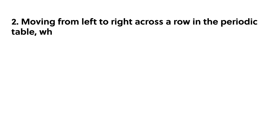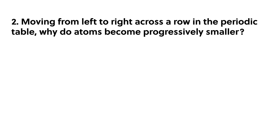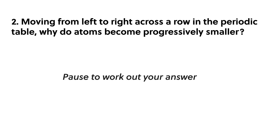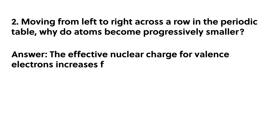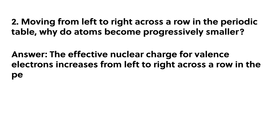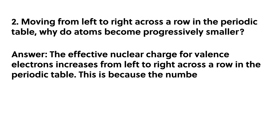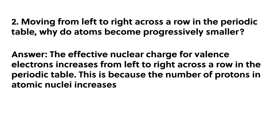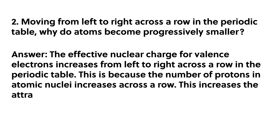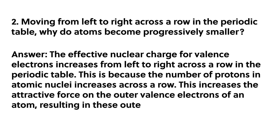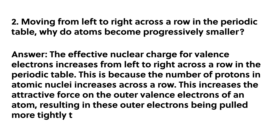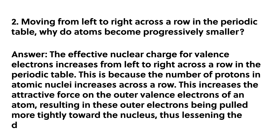Review question two: moving from left to right across a row in the periodic table, why do atoms become progressively smaller? The effective nuclear charge for valence electrons increases from left to right across a row in the periodic table because the number of protons in atomic nuclei increases across a row. This increases the attractive force on the outer valence electrons, resulting in these outer electrons being pulled more tightly toward the nucleus, thus lessening the diameter of the atom.